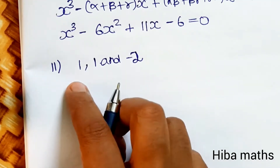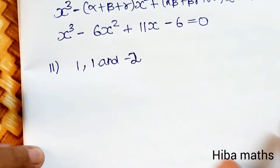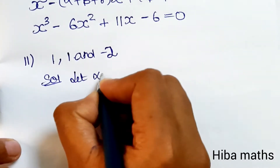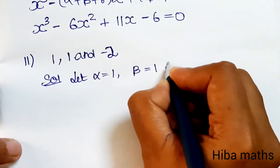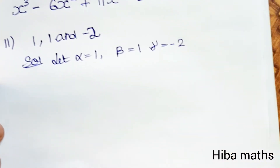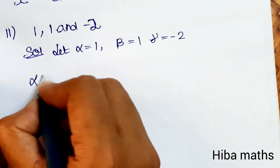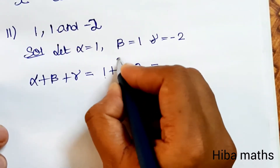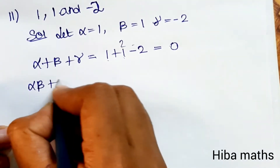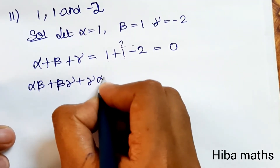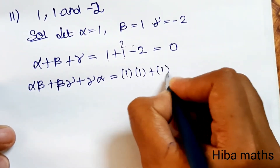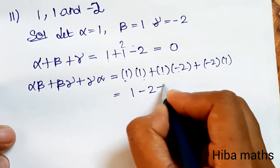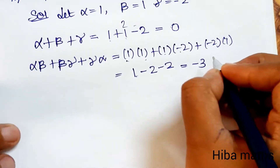This is our cubic equation. The next question has roots 1, 1, and minus 2. So alpha = 1, beta = 1, gamma = minus 2. Sum of roots: 1 plus 1 plus (minus 2) = 0. Sum of products: 1×1 plus 1×(minus 2) plus (minus 2)×1 = 1 minus 2 minus 2 = minus 3.